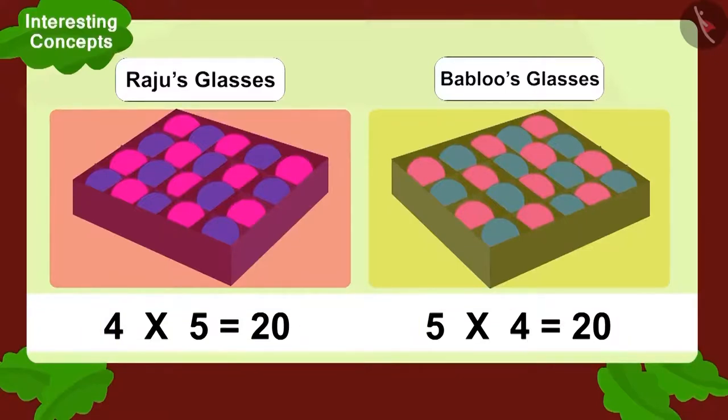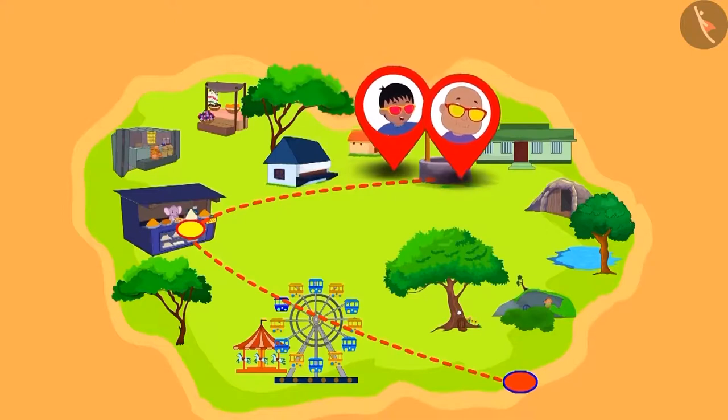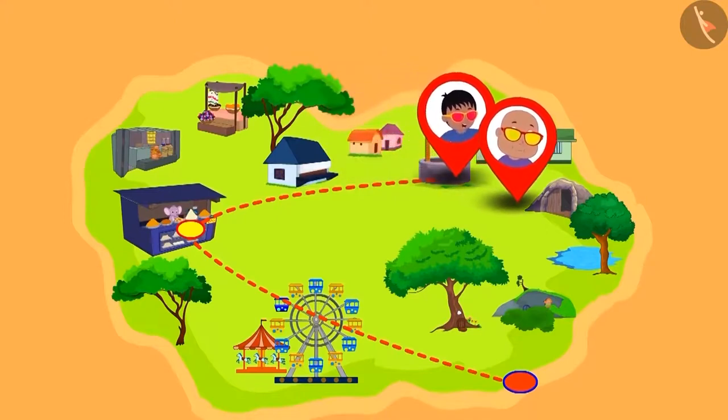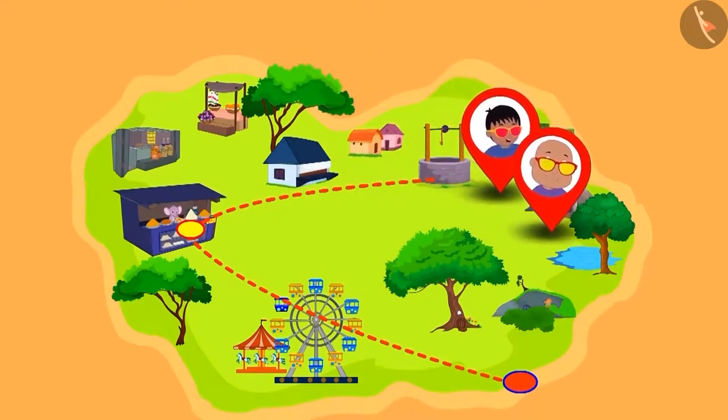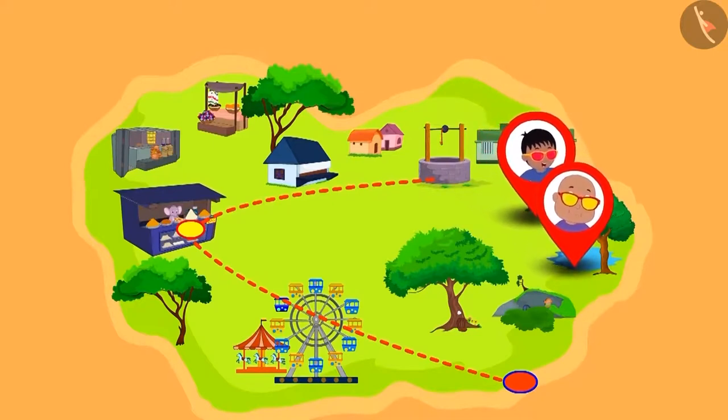Children, isn't it interesting? We can write any multiplication in two ways like this. And its answer will always be the same. Bablu and Raju were very excited seeing the multiplication magic of their glasses. They didn't realize that they had reached the park.